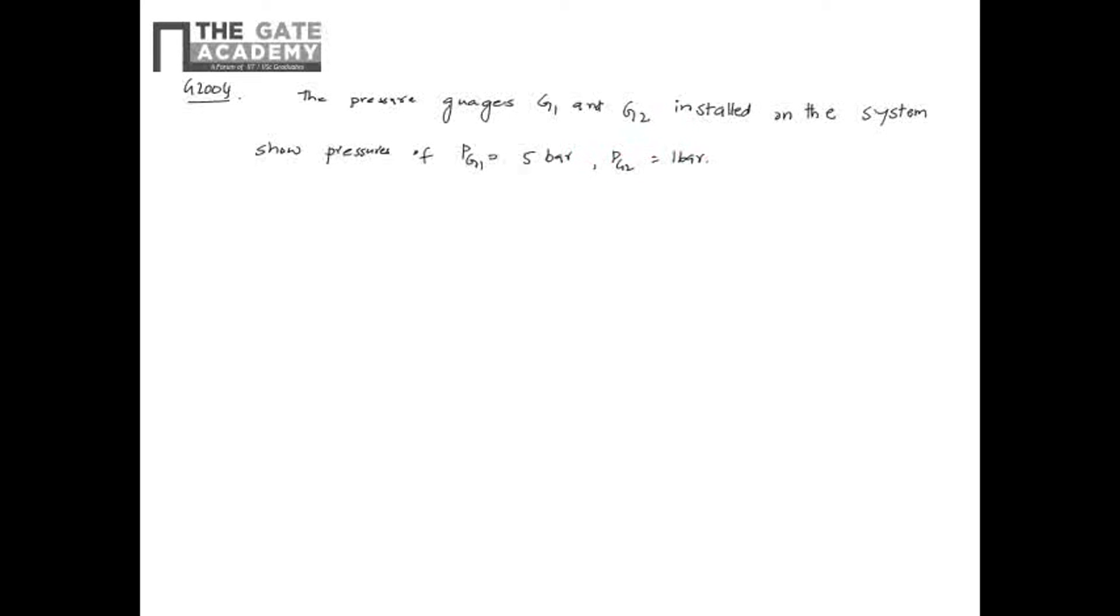So a figure is given, so I will draw this. These show pressure of PG1 is 5 bar, PG2 is 1 bar, and the value of unknown pressure P is - you are given with the chamber. On this you are given something like this: this is G1, this is G2, and atmospheric pressure is 1.01 bar. Options are 1.01 bar, B is 2.01 bar, C is 5 bar, and D is 7.01 bar.